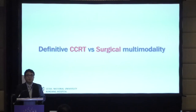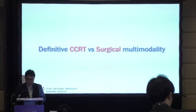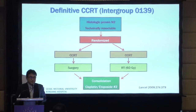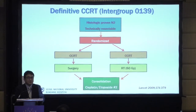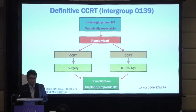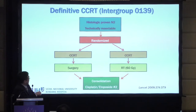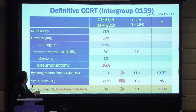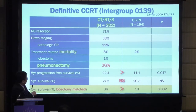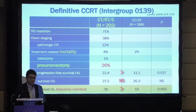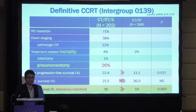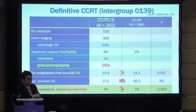We can compare the outcome of definitive CCRT versus surgical multi-modality therapy. The Intergroup 0139 trial for histologically proven N2, technically resectable cases, randomized to CCRT followed by surgery versus CCRT with RT to 60 Gy. CCRT followed by surgery showed better outcome. Although mortality of pneumonectomy is quite high, when the surgical procedure is a lobectomy, we can achieve good outcome with chemotherapy plus surgery versus definitive CCRT alone.